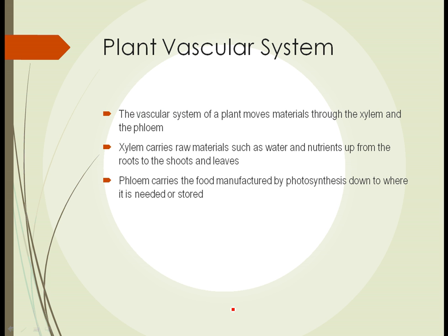The vascular system of a plant moves materials through two separate types of tubes called the xylem and the phloem. The xylem carries raw materials like water, nutrients, and minerals up from the roots of the plant to the shoots and leaves, where they can be used in photosynthesis. The phloem then carries the food manufactured by photosynthesis back down through the plant to places where it's needed or where it's going to be stored.